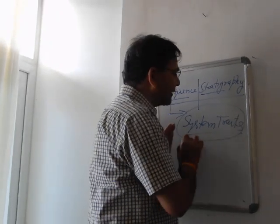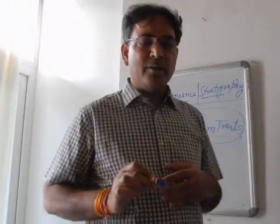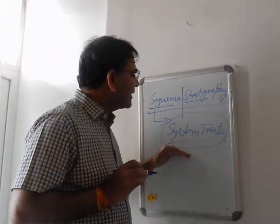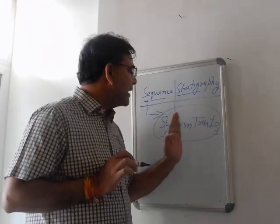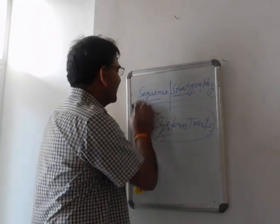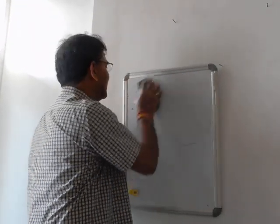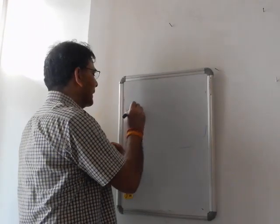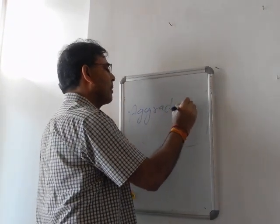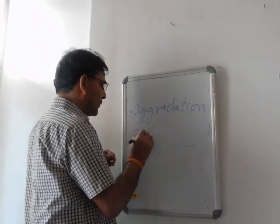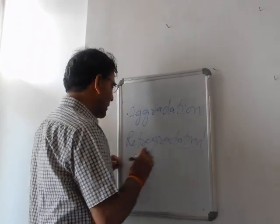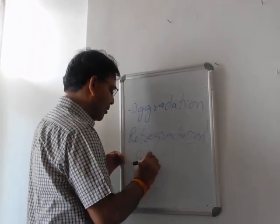Every system tract consists of further smaller units known as parasequences, and there are different types of stacking patterns in every system tract. Generally there are three types of stacking patterns: one is known as aggradation, another is retrogradation, and the third one is progradation.